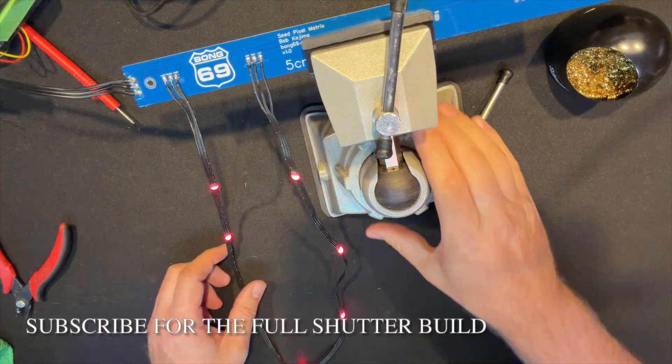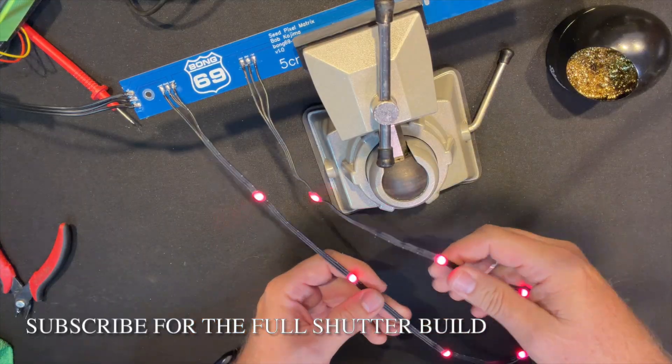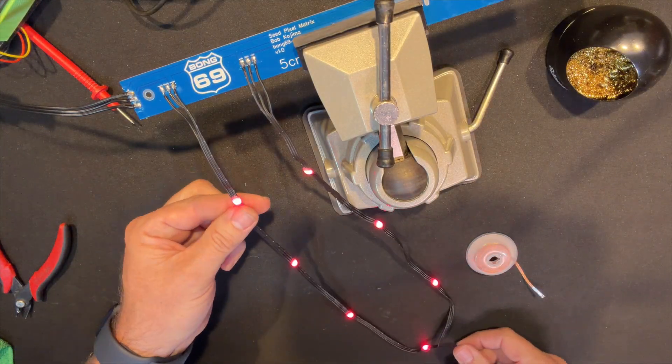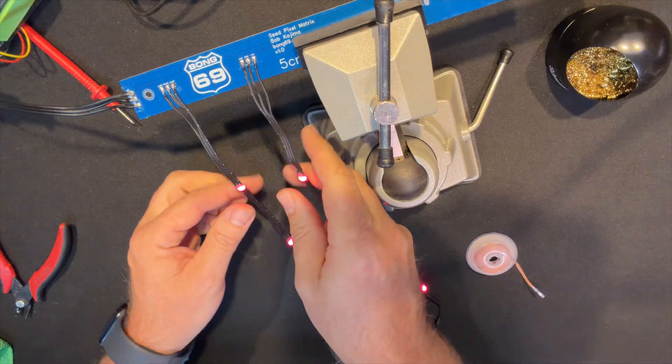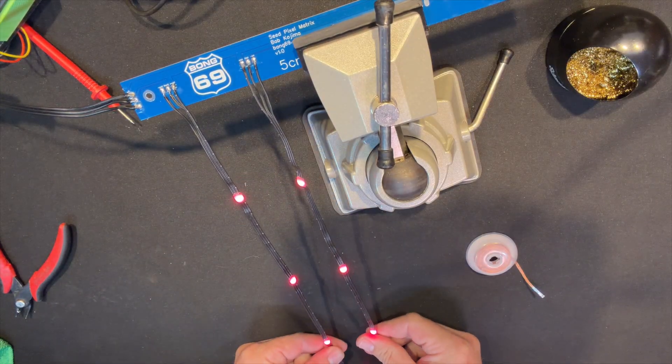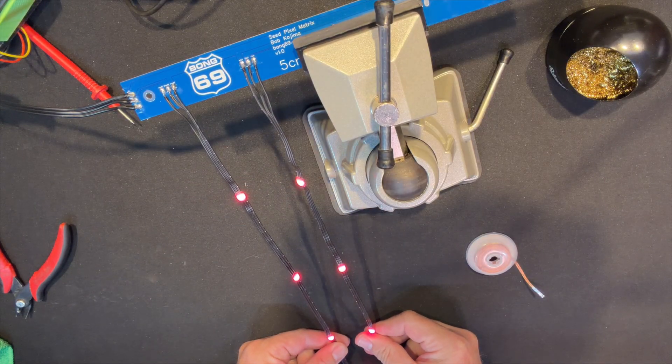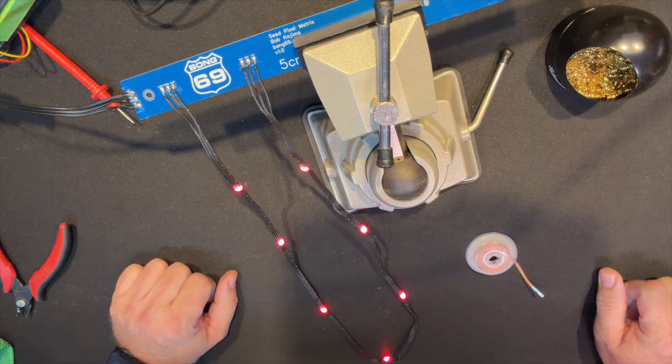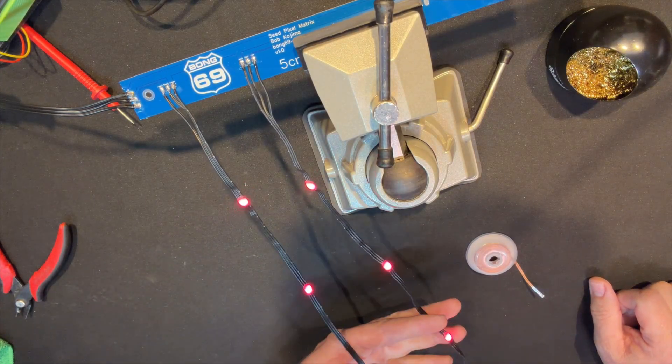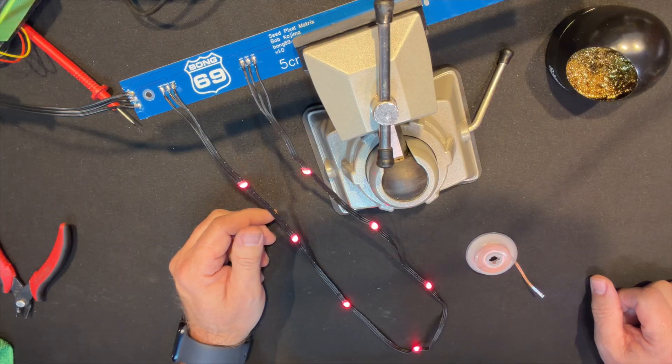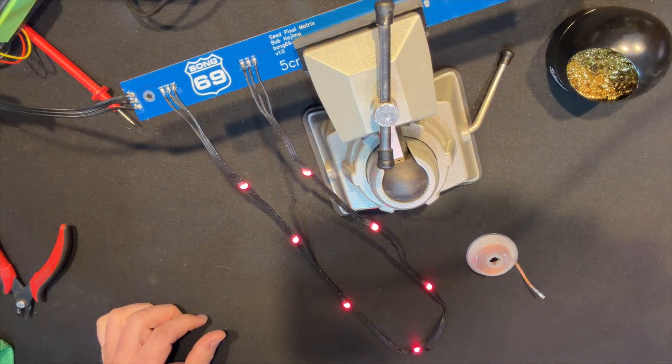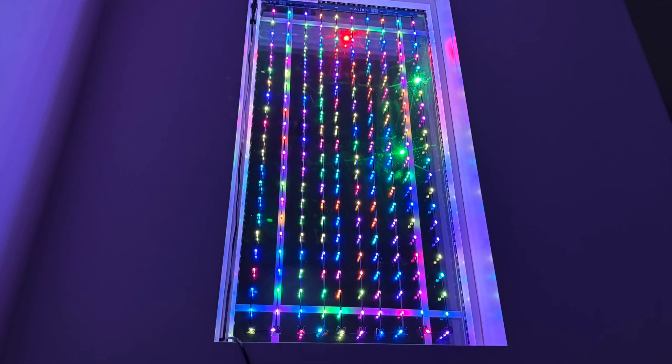So that's my full prototype test using the PCB designed by Bong69. This thing made the build 10 times easier. And when I start the full shutter matrix, it's going to look insane. If you want to follow along as I build the full thing, go ahead and subscribe. Thanks for watching Twinkle Tunes and Lighting. See you on the next one.